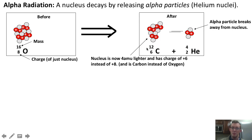The nuclear charge is no longer positive eight because of eight protons — it's now only positive six because there's only six protons remaining. And you'll notice that the element changes too, so it's no longer an oxygen nucleus. It's now a carbon nucleus.